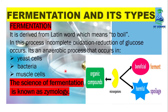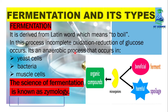Today we will discuss what is fermentation. Fermentation is derived from the Latin word which means to boil. In this process, incomplete oxidation-reduction of glucose occurs. It is an anaerobic process that occurs in yeast, bacteria, and muscle cells. Fermentation is called an anaerobic process because it occurs in the absence of oxygen.